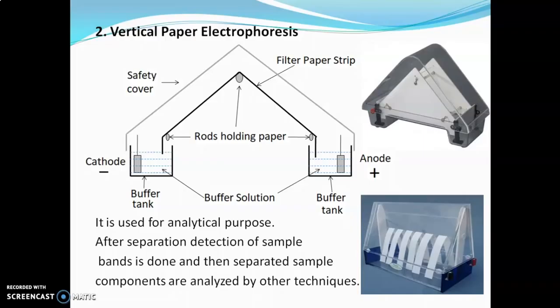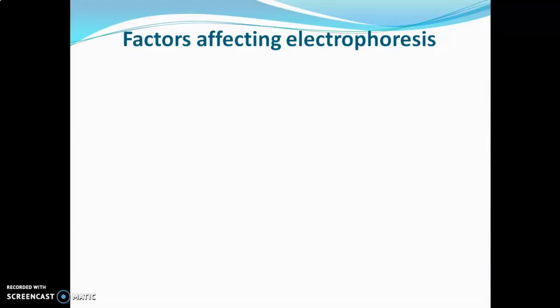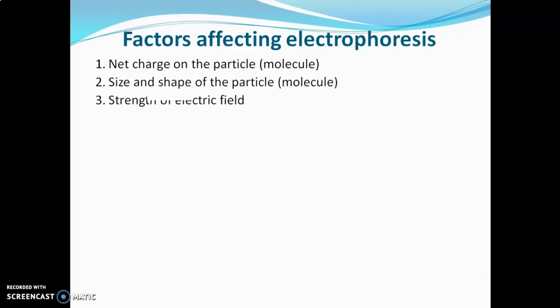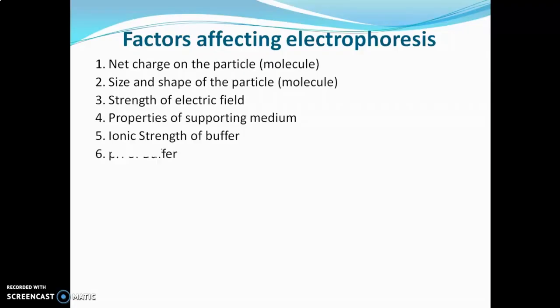The third type, continuous paper electrophoresis, is particularly used for preparative analysis and has not been covered in detail here. Factors affecting electrophoresis include: net charge on the particle, size and shape of the particle, strength of the electric field applied, properties of the support medium, ionic strength of the buffer, pH of the buffer, and temperature or heat generated. All seven factors, as well as buffers used in electrophoresis, are explained in previous videos with links in the description box.